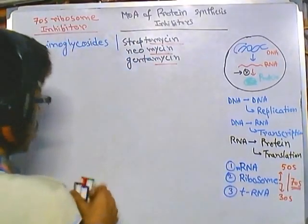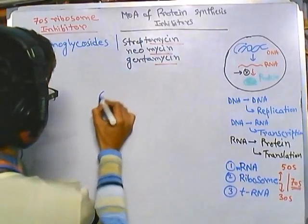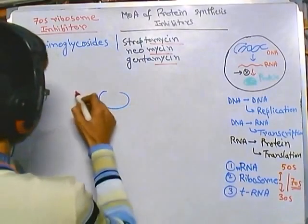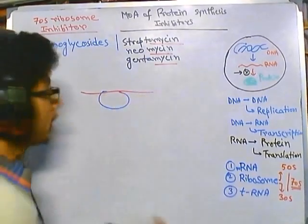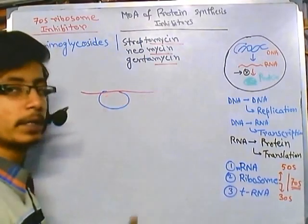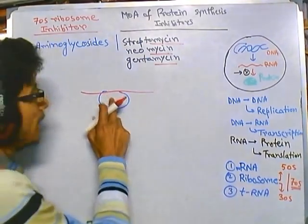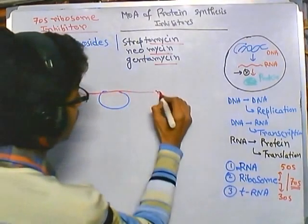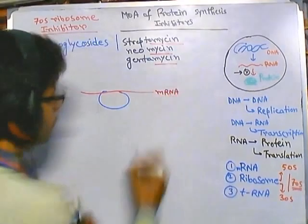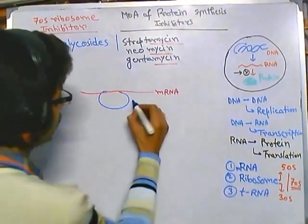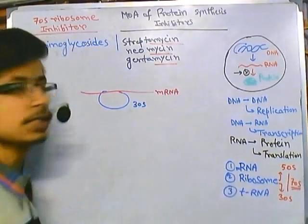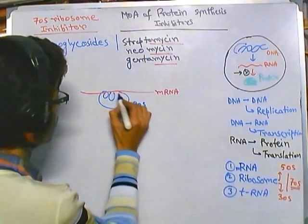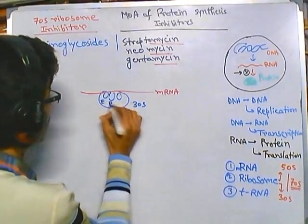At the very beginning of protein synthesis, the 30S subunit binds with the ribosome. There is a complementary pairing between the rRNA present in the 30S subunit and the mRNA. Due to this interaction, the mRNA and 30S ribosome complex forms, and this is called the pre-initiation complex of translation.